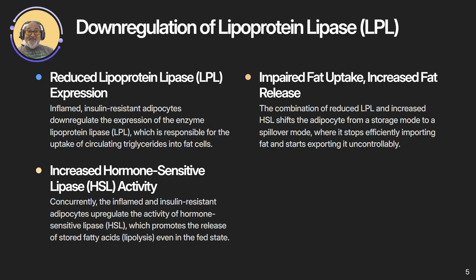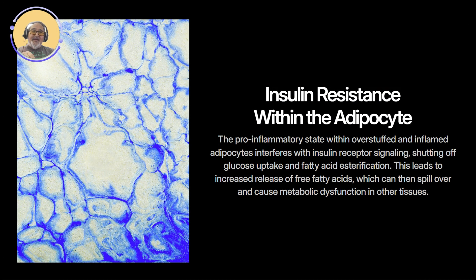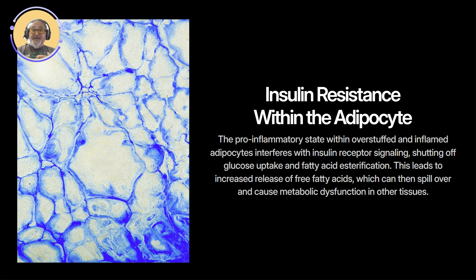And if one fat cell is in this state, all of them are to some degree — you're really having problems at this point. Insulin resistance within the adipocyte: the pro-inflammatory state interferes with insulin receptor signaling, inhibiting IRS-1 and AKT pathways, preventing GLUT4 translocation — that's when GLUT4 comes to the cell wall and allows sugar into the fat cell — and shuts off normal anabolic storage signaling. Without effective insulin action, glucose uptake stops, so blood sugar continues to rise. Fatty acid esterification is impaired, and more free fatty acids — FFAs — leak into circulation. This is a major sign of metabolic dysfunction.